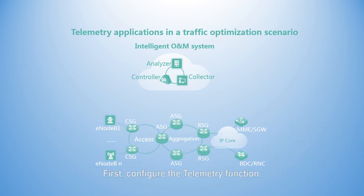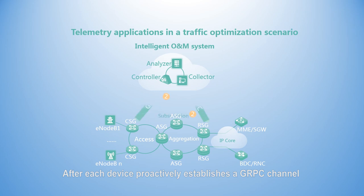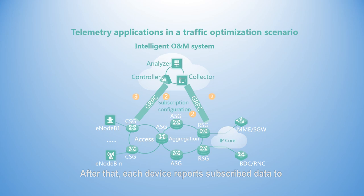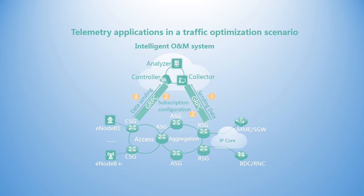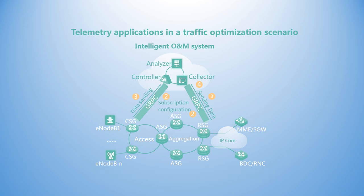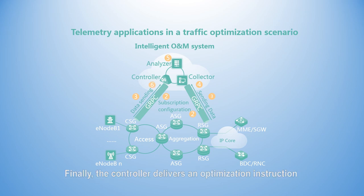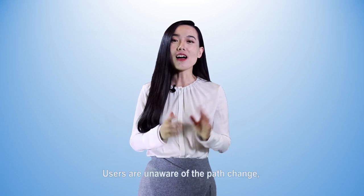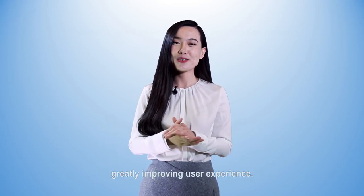The detailed telemetry deployment procedure is as follows. First, configure the telemetry function. After each device proactively establishes a gRPC channel with the intelligent ONM system, configure subscription tasks on the devices. After that, each device reports subscribed data to the collector through the gRPC channel. The collector then receives, stores, and processes the reported data, and the analyzer analyzes it using a big data analysis system. Finally, the controller delivers an optimization instruction to optimize the network. The entire process is quick and convenient — users are unaware of the path change, greatly improving user experience.